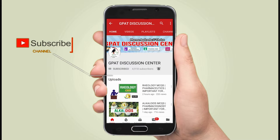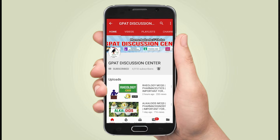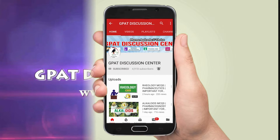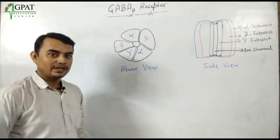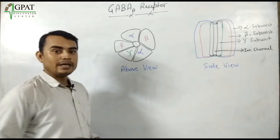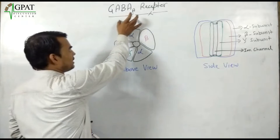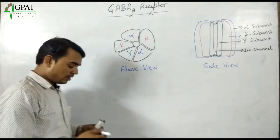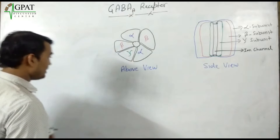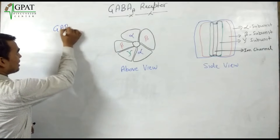Hello friends, subscribe to our channel GDC and press the bell icon for more updates. Today I am going to discuss some basic points of the GABA-A receptor. As we know, there is a neurotransmitter named GABA.